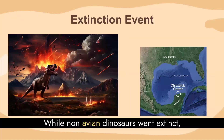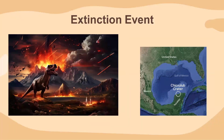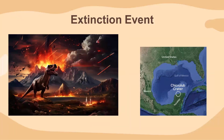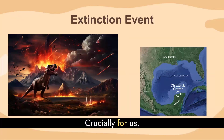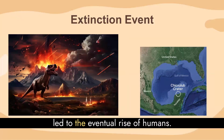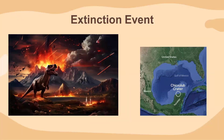While non-avian dinosaurs went extinct, their avian descendants — which are birds — survived and continue to thrive today. Crucially for us, the extinction of dinosaurs allowed mammals to become the dominant land animals and led to the eventual rise of humans.